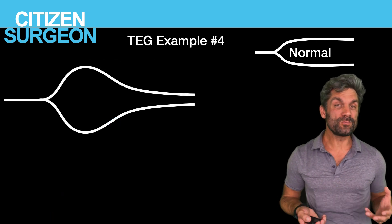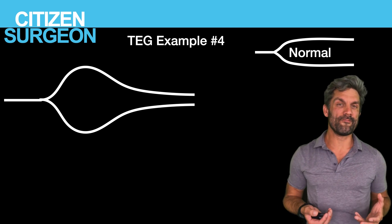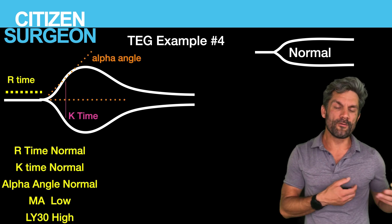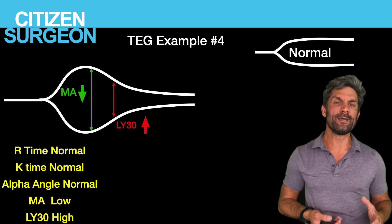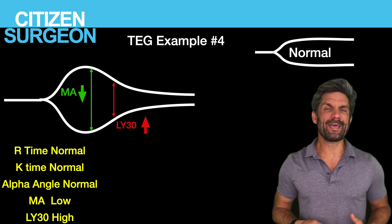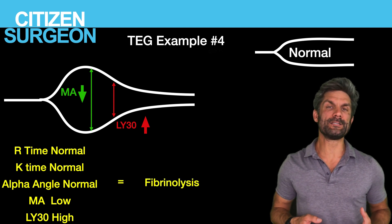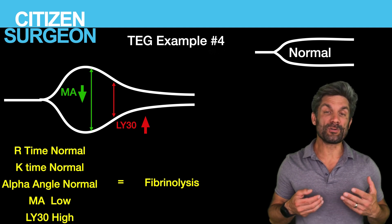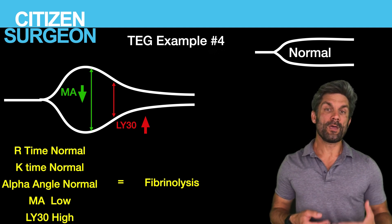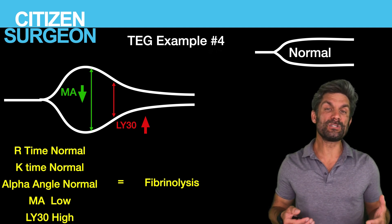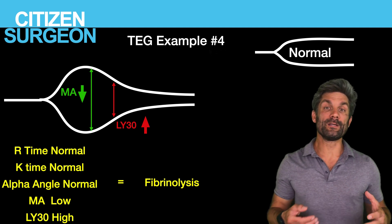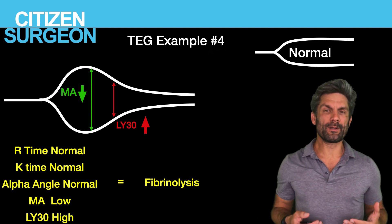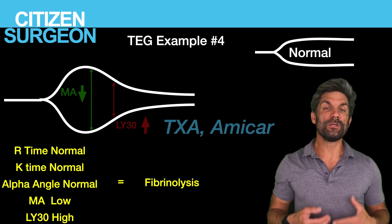This fourth waveform looks quite different. Our R time is normal, our K time and alpha angle are normal, so we're forming clot — but we're getting a constantly decreasing value in our maximum amplitude. This shows fibrinolysis occurring. The patient may have trauma-induced coagulopathy or DIC with increasing fibrinolysis, or they may have received TPA or tissue plasminogen activator. To decrease fibrinolysis, you can give TXA or Amicar.